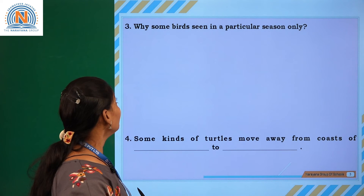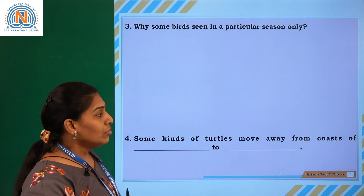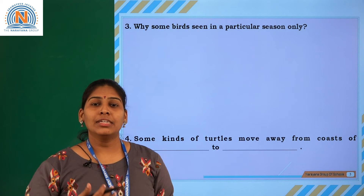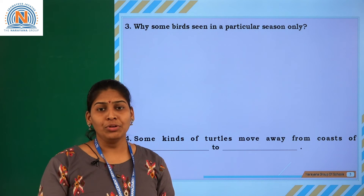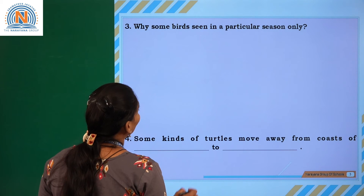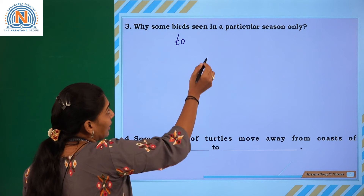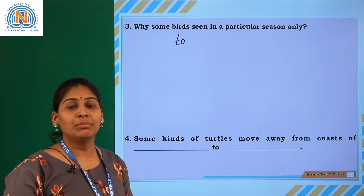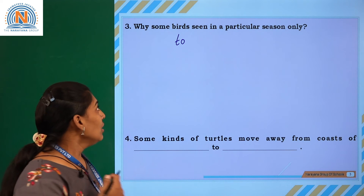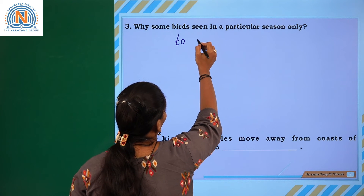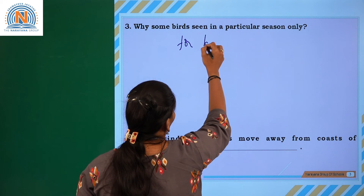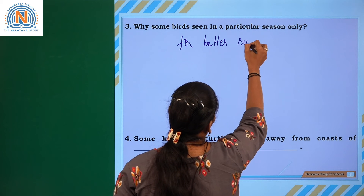The next question: why are some birds seen in particular seasons only? Birds migrate from one place to another place to live in better conditions. They move from one place to another in a particular season. They need certain conditions to lay eggs, to reproduce. They move especially for their better survival.